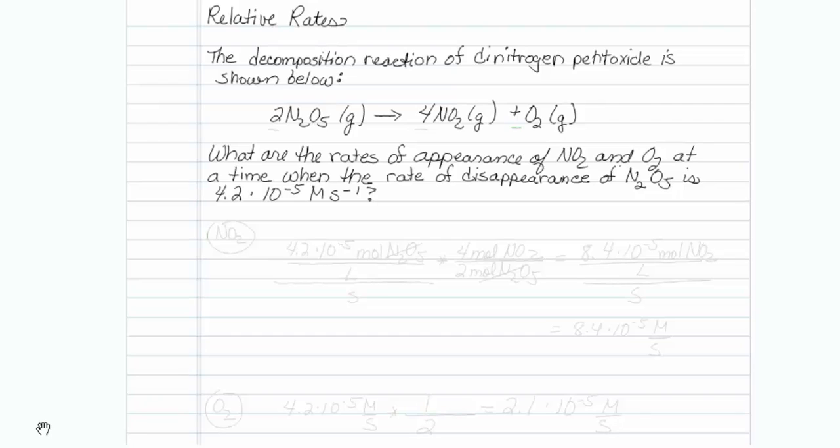Well this is simply related to the coefficients in front. The rates have to be relative 2 to 4 to 1, just like the coefficients are in the reaction.